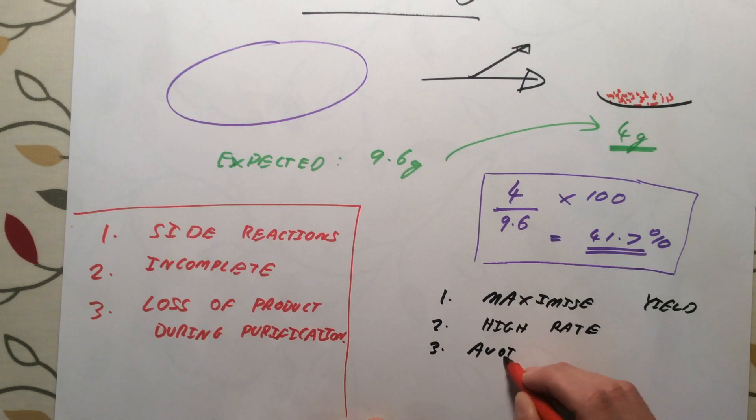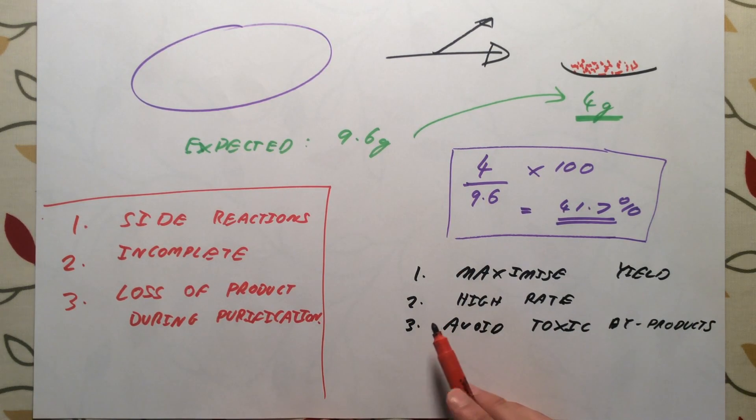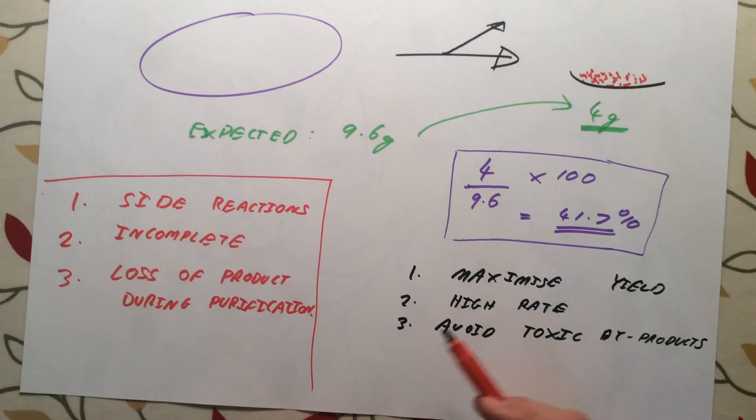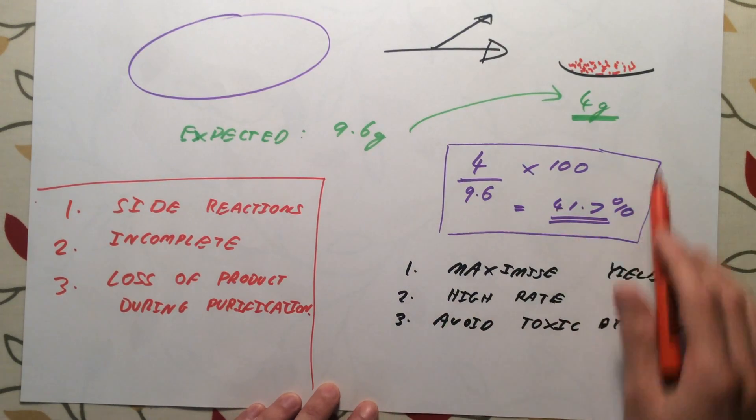The third one: they want to try and avoid producing toxic byproducts. In lots of processes you might make a toxic gas or a toxic chemical that you would have to then pay lots of money to dispose of. If possible we want to avoid that from happening. By combining these ideas together industrial chemists can maximize their profits. They can produce lots of a product nice and efficiently with a high yield and avoid having to pay to dispose of any toxic byproducts.